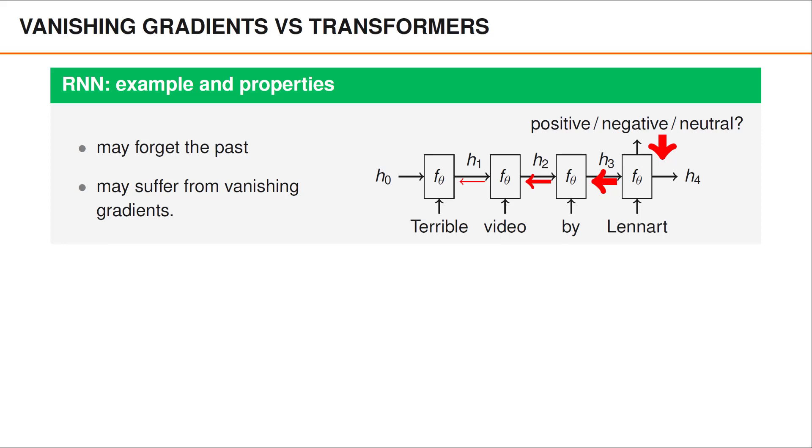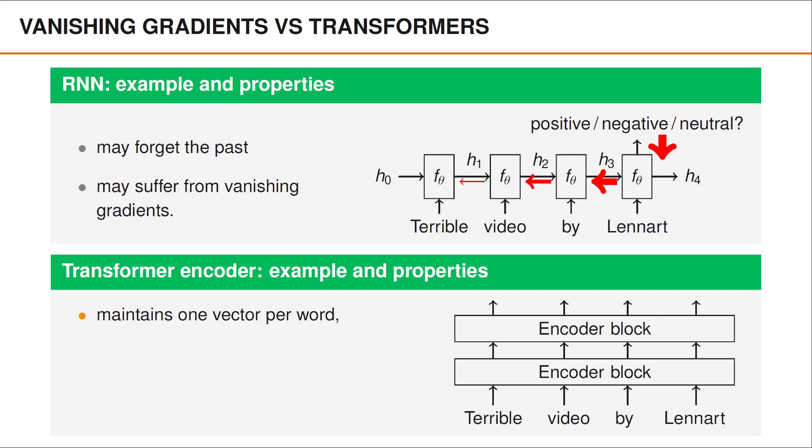In this example, vanishing gradients would have the unfortunate consequence that we wouldn't know how to adjust our weights to obtain a better hidden state at time 1, which probably would prevent us from solving the problem well.